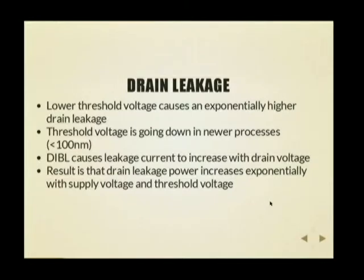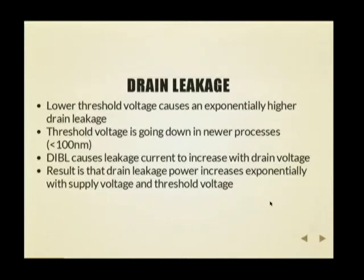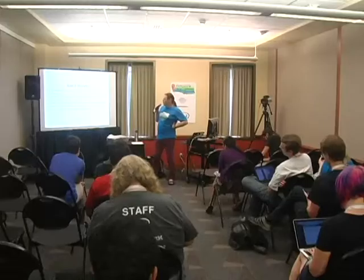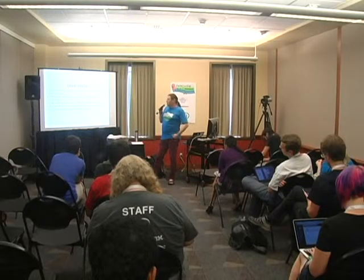As soon as the voltage at the gate rises beyond a certain level — what they call the threshold voltage — the switch is considered closed and the current will flow. The threshold voltage is going down quite rapidly as we have newer processes. Today it's somewhere around 800 millivolts, and it used to be much higher.